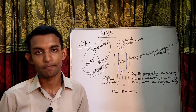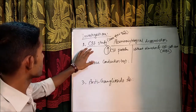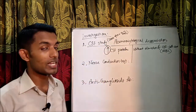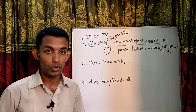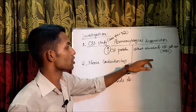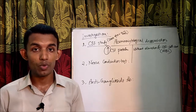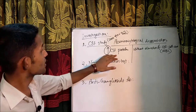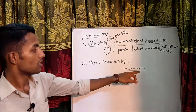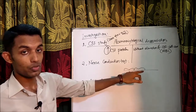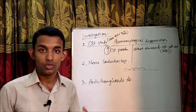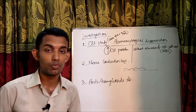Investigations for GBS: First is CSF study, which should be done after 10 to 14 days. It will show albuminocytological dissociation — meaning there is an increase in CSF protein without elevation of CSF cell count (WBC). The source of the protein is the myelin; whenever there is demyelination and breakdown of myelin, it releases protein. This takes time, which is why the CSF study should be done after 10 to 14 days.